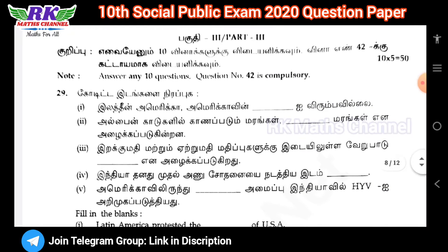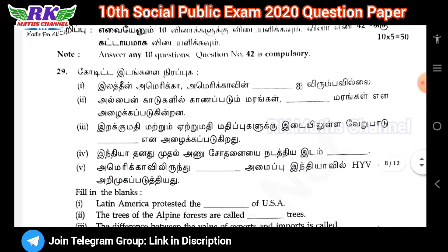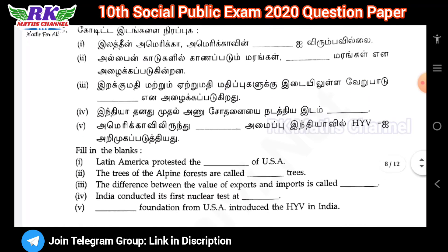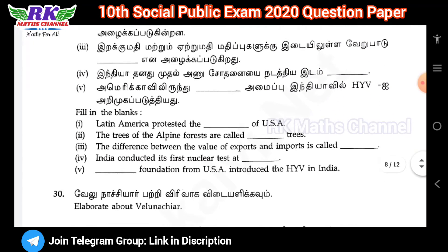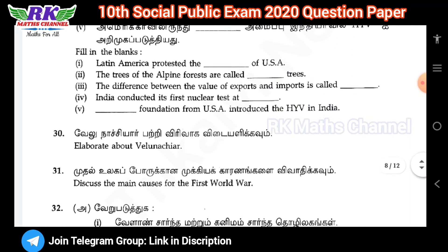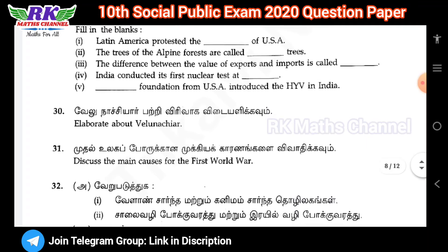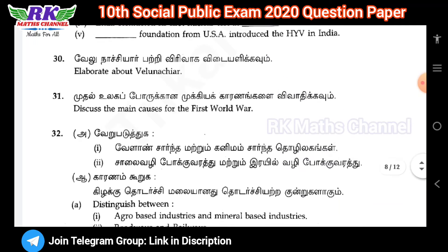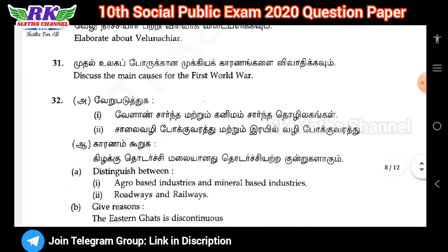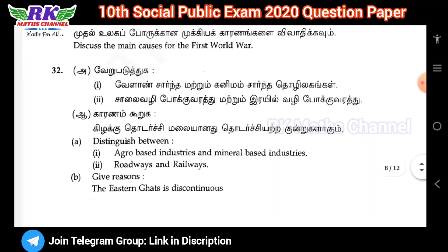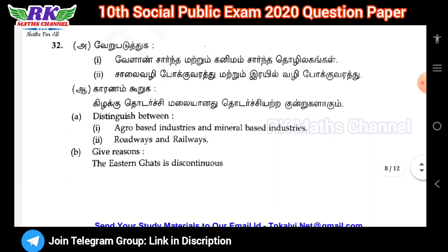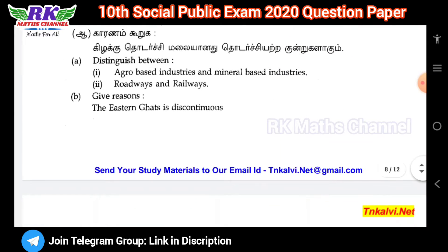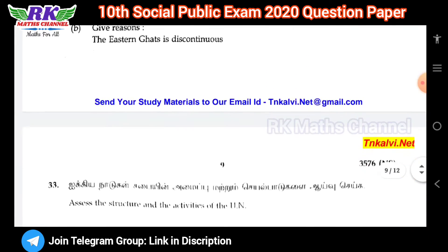Question number 42 is the compulsory question. Part 3 includes match the following, two or three questions, also distinguish and give reasons — difference/distinguish questions — the reasons for the model and related questions.